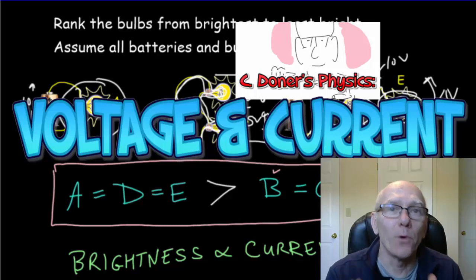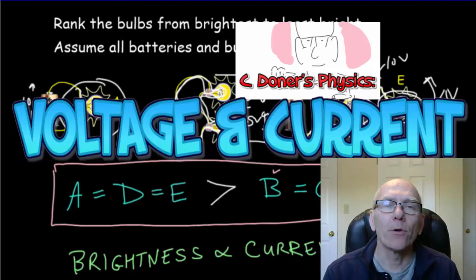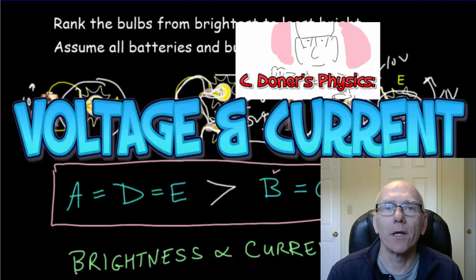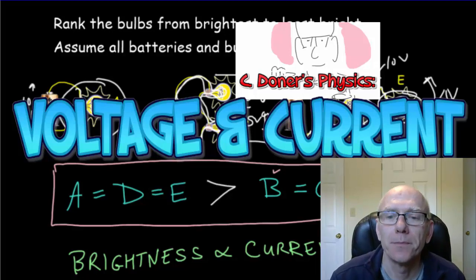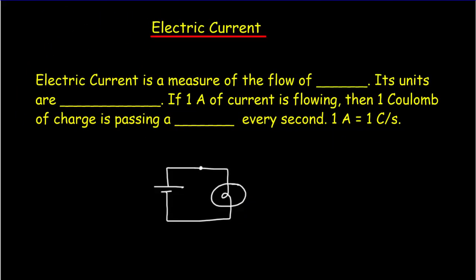Today we're going to look at the concepts of voltage and current and how they're related to one another. We're now going to shift out of electrostatics where the charges couldn't move, and shift into electric circuits where we have currents and the charges can move.